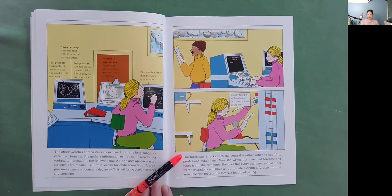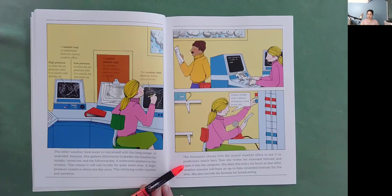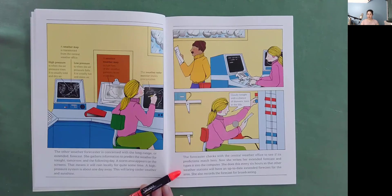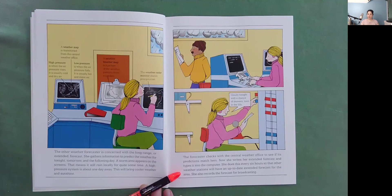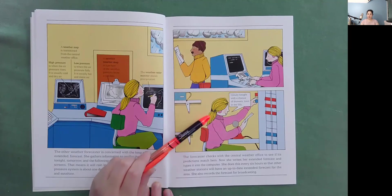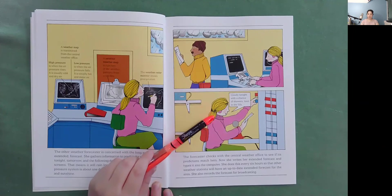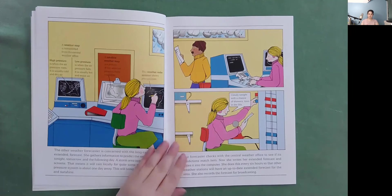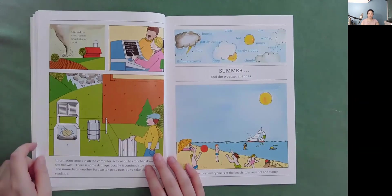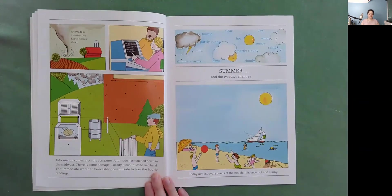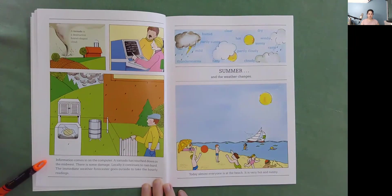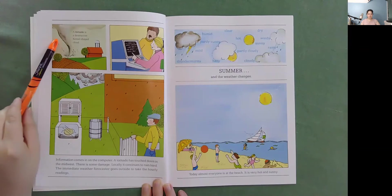The forecaster checks with the central weather office to see if its predictions match hers. Now she writes her extended forecast and types it into the computer. She does this every six hours so that the other weather stations will have an up-to-date extended forecast for the area. She also records the forecast for broadcasting. So here the forecaster is saying cloudy tonight with a chance of showers. Lows in the 30s.